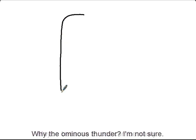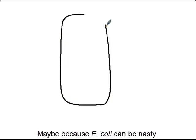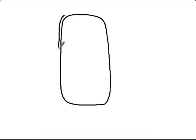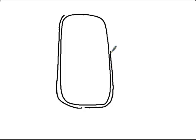E. coli is a rod-shaped bacteria, so you need to draw an oblong shape. This is the inner layer and you're actually going to draw three layers. The inner layer is the cell membrane, the layer I'm drawing now is the cell wall, and this outside layer here is called the capsule. I'm leaving a little bit of a gap down here — the reason will be apparent in a minute.